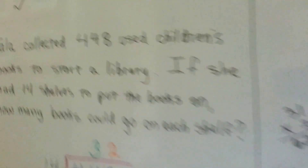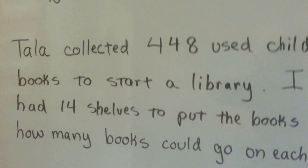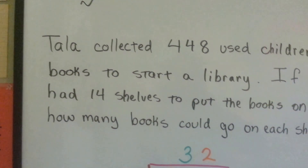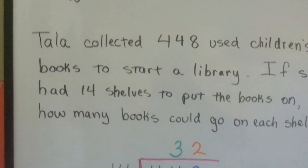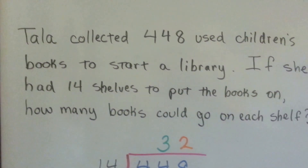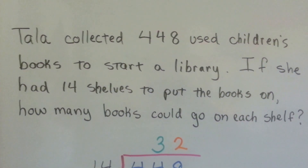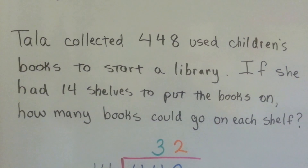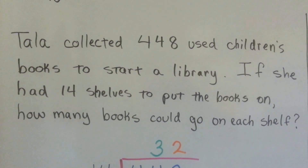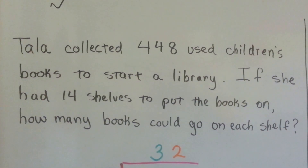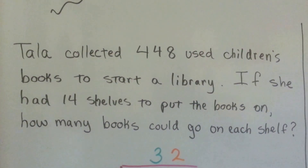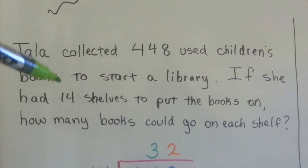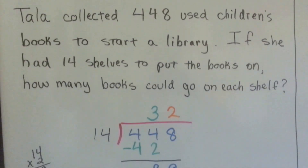Tala collected 448 used children's books to start a library. If she had 14 shelves to put the books on, how many books could go on each shelf? So we need to divide 448 by 14.